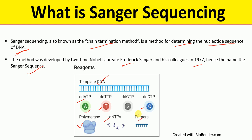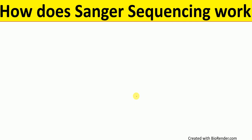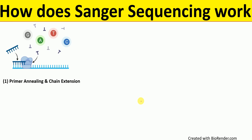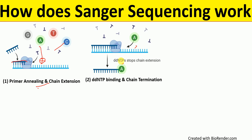The first step of Sanger sequencing is primer annealing and chain extension. We add all the reagents and DNA polymerase adds dNTPs, as well as ddNTPs. Whenever a ddNTP gets added, chain extension gets stopped. When a dNTP is added the chain is extended, but if any ddNTP gets added, the chain extension will be terminated — ddNTP addition by DNA polymerase results in chain termination.